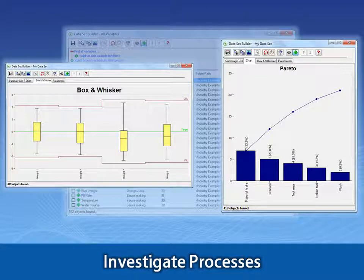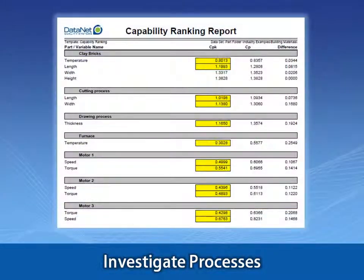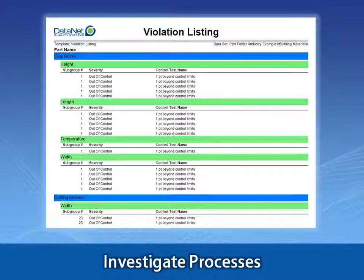For example, you can easily search across all operations to uncover which processes have a declining CPK or a rising number of control limit violations.